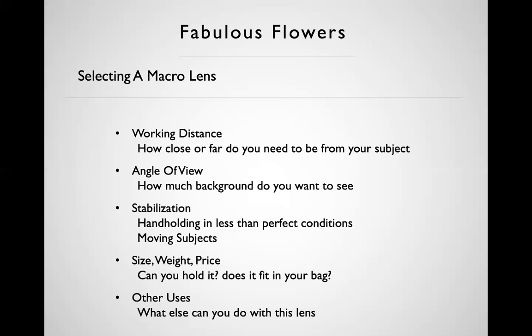Today nearly all mirrorless camera bodies have some built-in stabilization, so the lens doesn't necessarily need it — but it's nice to have something in the system to help you shoot longer exposures. Size, weight, and price matter too: all else being equal you'd buy the smallest and least expensive, but larger macro lenses like the old 180mm are unbelievably sharp.